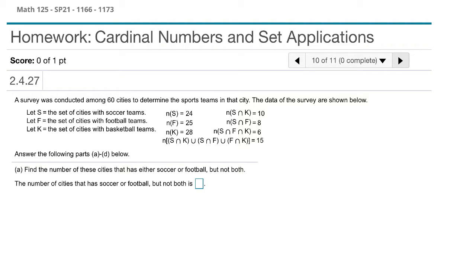Greetings everybody, and welcome to example six in our series on cardinal numbers and set applications. In this problem, we are given information from a survey where we have cities with soccer teams, football teams, and basketball teams. We're given information about the cardinality of each of those, and then we're asked to determine unknown cardinalities. The idea behind this one, just like the last one, is that we do everything with Venn diagrams.